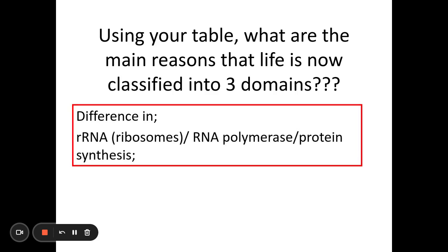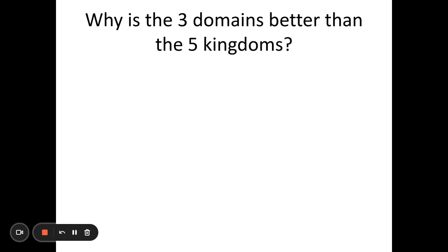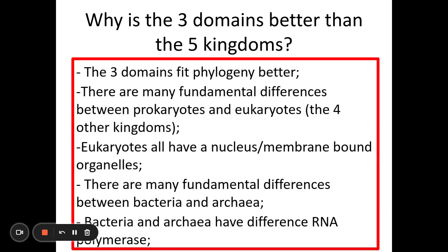Anything in a red box is taken directly from the mark scheme — this is what the mark scheme likes you to talk about regarding why life is now classified into three domains. We have a lot more evidence for the three domains than for the five kingdoms, so the three domain system is more widely supported by scientists. It fits phylogeny — the closeness of evolutionary relationships — better, due to the fundamental differences between prokaryotes and eukaryotes, and between bacteria and archaea.